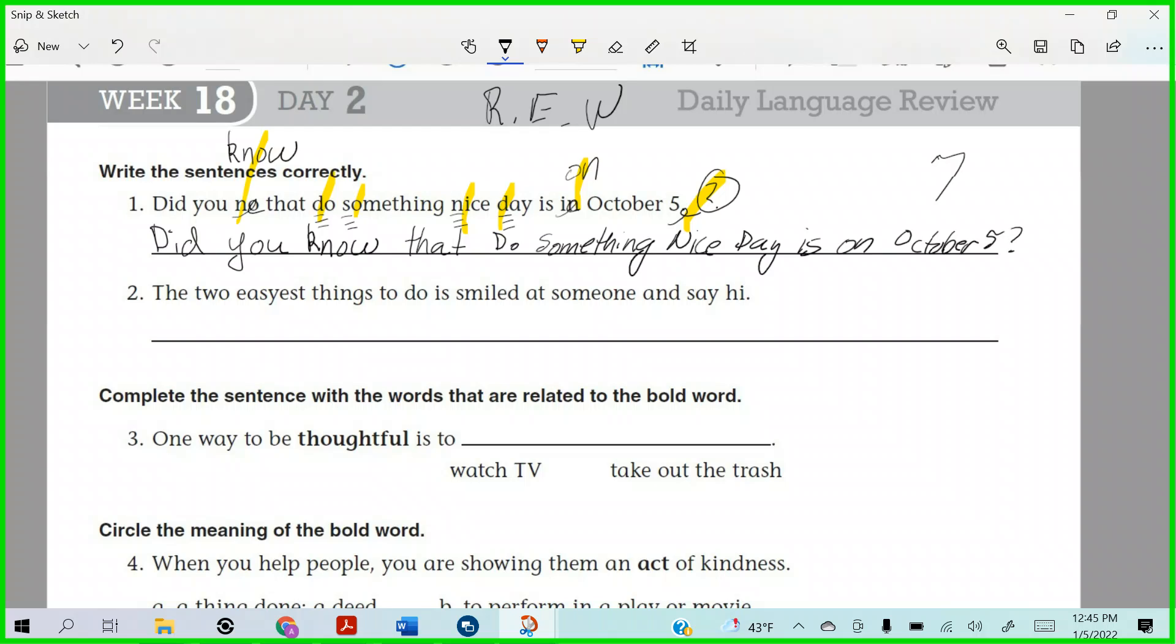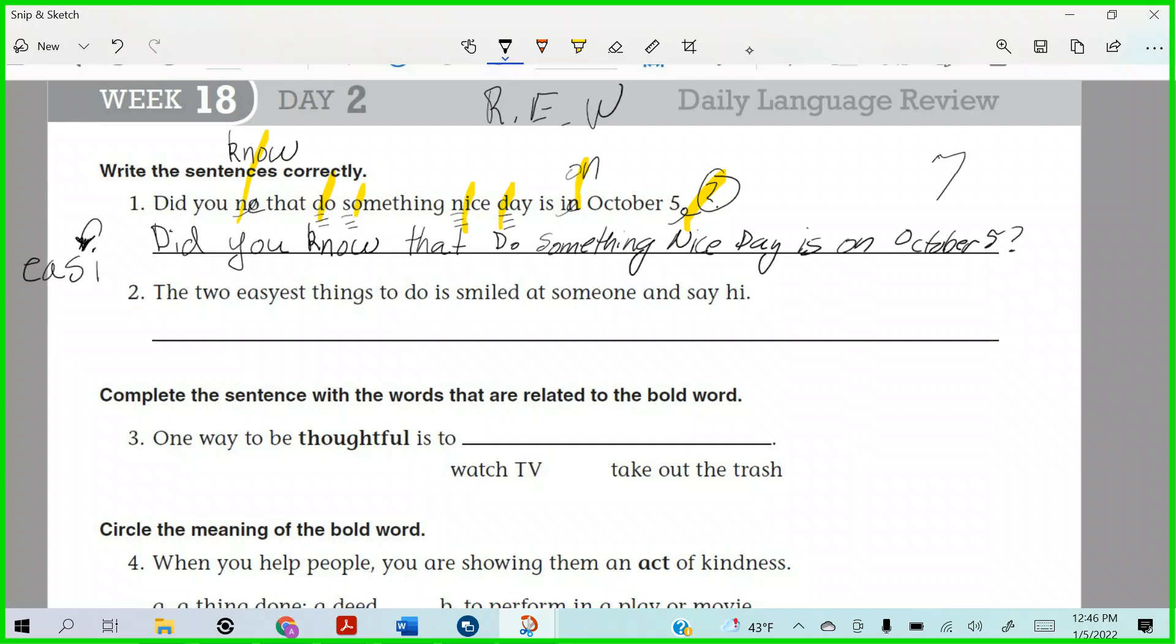Alright, the two easiest things to do is smiled at someone and say hi. That is a hot, scalding, piping hot mess. Blake, what do you see first? Easiest is spelled wrong. Give me the rule of Y here, Blake. So I have E, A, S, Y. What comes before the Y? Which is a vowel or a consonant. Let's get rid of the Y and then the suffix. E-S-T, because the suffix is E-S-T.